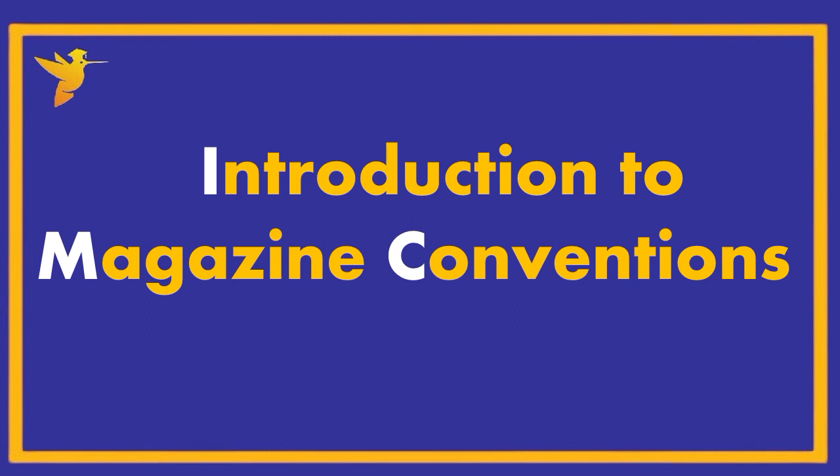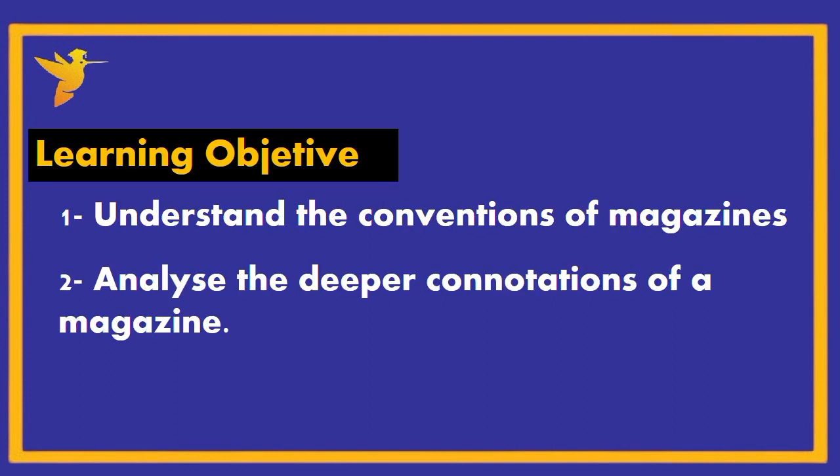Let's look at the objectives for this lesson. We're going to be understanding the conventions of magazines and also attempting to analyze the deeper connotations of a magazine. Conventions are things you expect to see in a certain media text, or things that are commonly used in a media text. In a cowboy Western movie, you'd expect to see guns, cowboy hats, horses, and sheriffs. These are all conventions, but magazines have their own conventions as well, and that's what we're going to be looking at today.